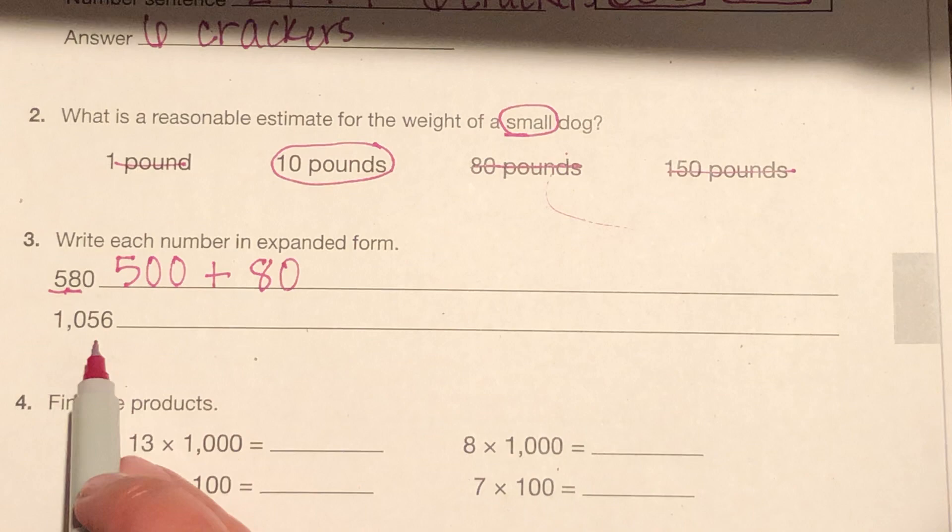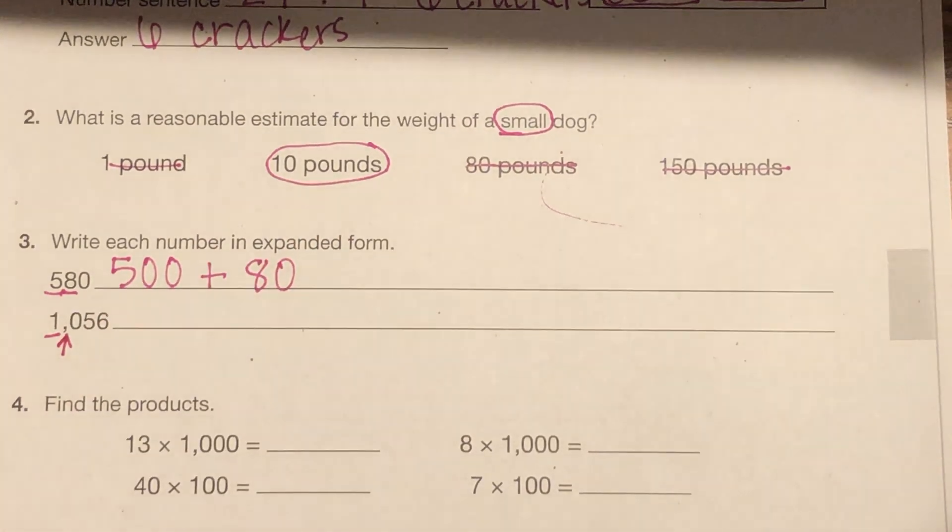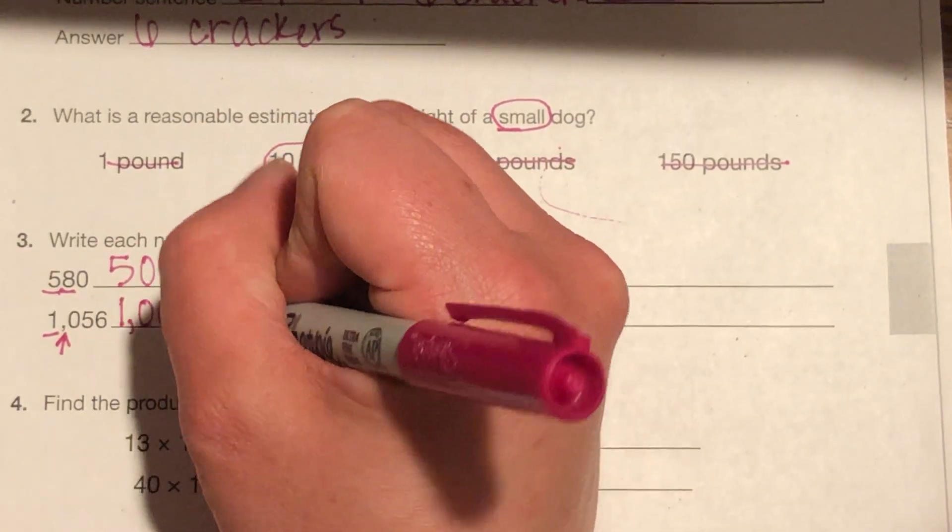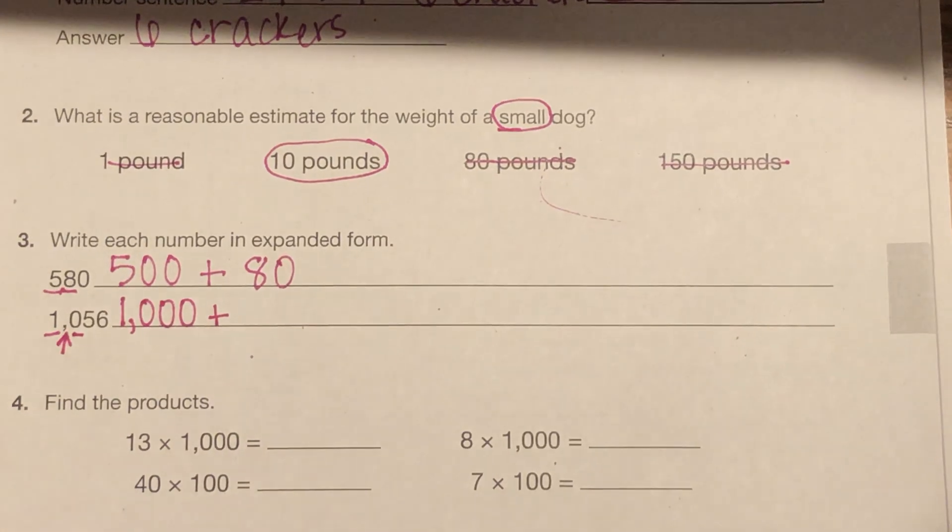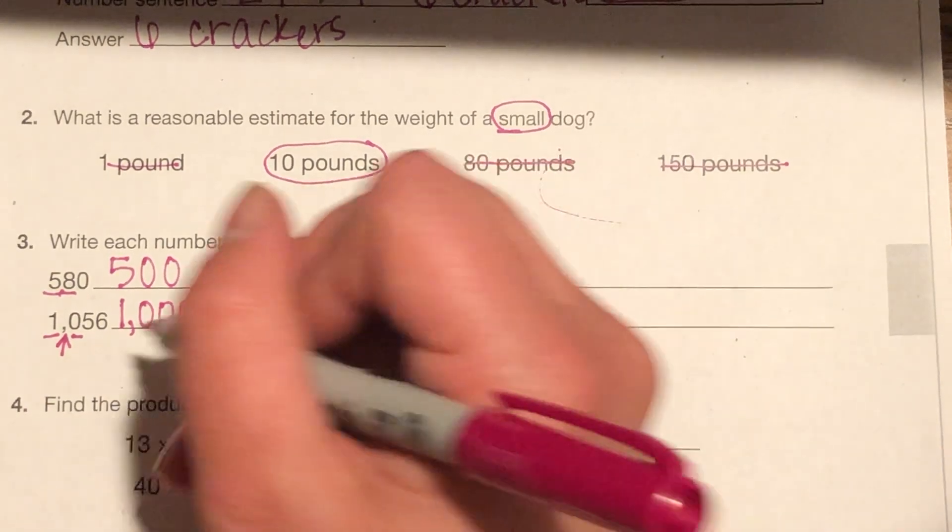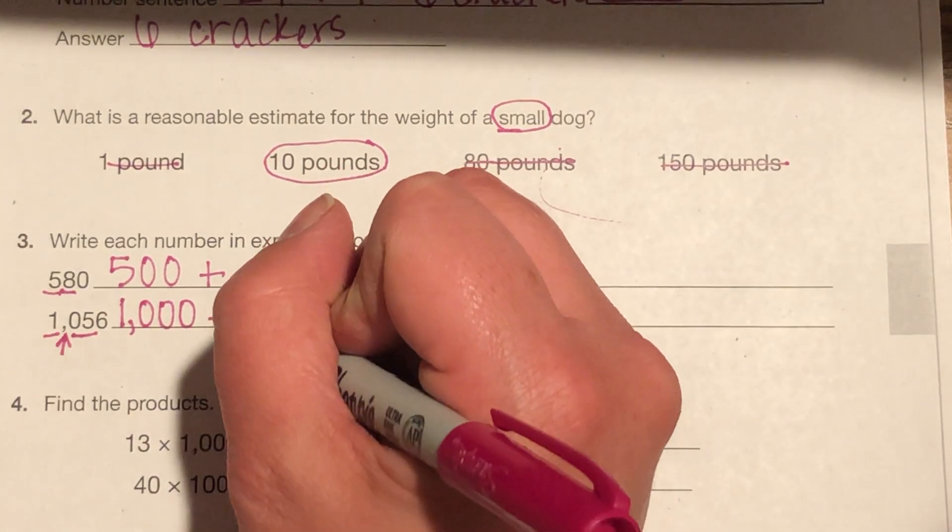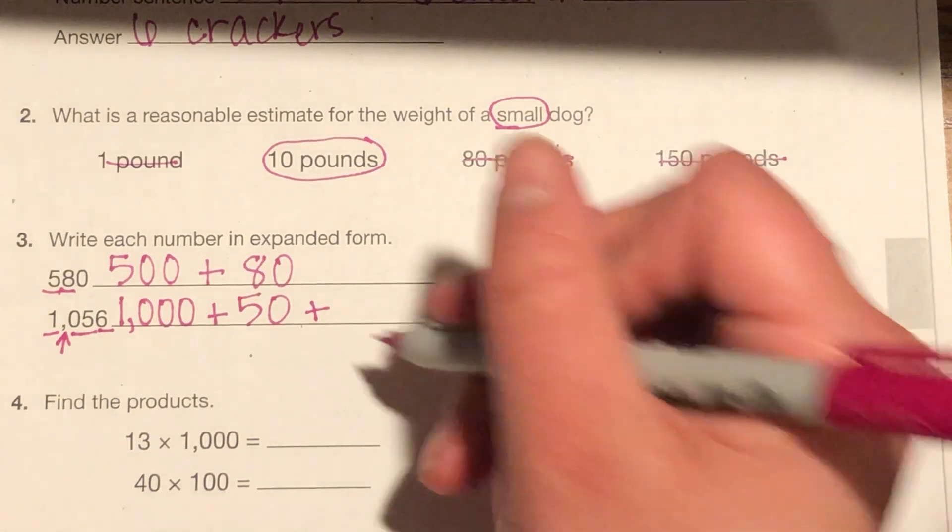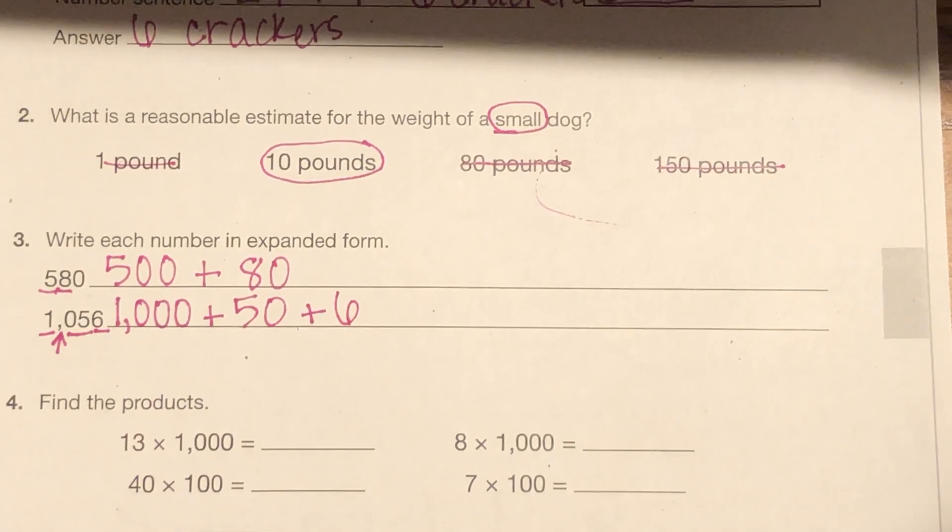Now we're going to move on to 1056. I see my largest one is going to be in my thousands. I can look at my comma and know, have that reference that it's in my thousands. So that one, that digit one, is representing the value of 1,000. I have a zero in the 100 spot, which means I do not need to write a number. That's just a place value holder. I have a 5 in the 10th spot, which represents what value? 50. And I have a 6 in the 1 spot, which represents what value? 6. So my expanded form equation would be 1,000 plus 50 plus 6.